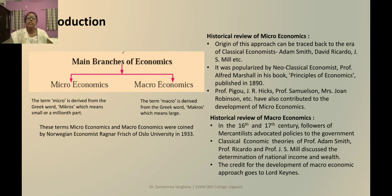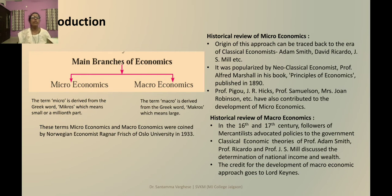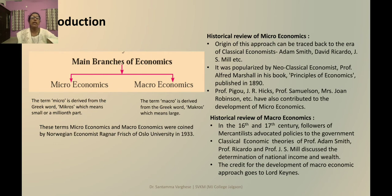Microeconomics is a term derived from the Greek word 'micros', which means small or a millionth part. In the same way, macroeconomics is derived from the Greek word 'makros', which means large. This term was coined by the Norwegian economist Ragnar Frisch of Oslo University in the year 1933. Ragnar Frisch is an economist who received the Nobel Prize in 1969.